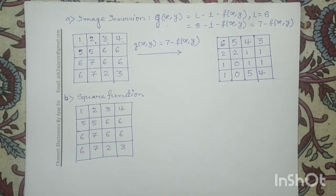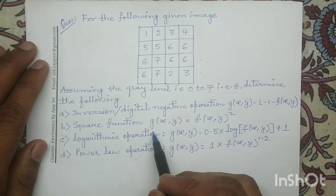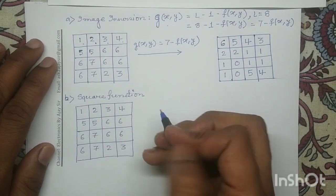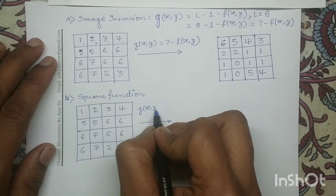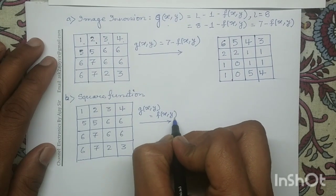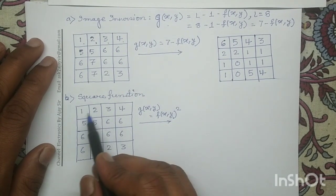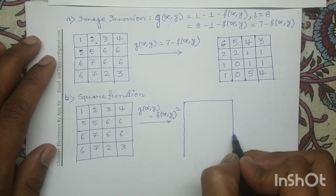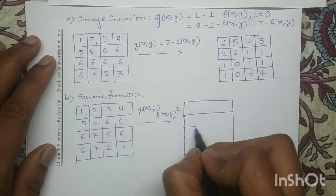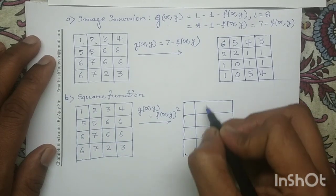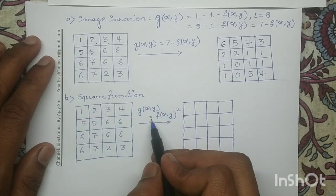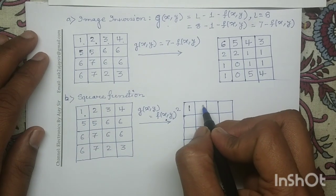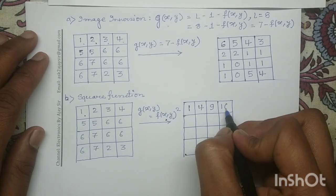Next we have to perform the square function. The mathematical equation of the square function in this question is g(x,y) equals f(x,y) whole square. So on this digital image we will apply g(x,y) equals f(x,y) whole square. Again, to draw the output image we check the dimension of the input image — since it is 4×4, the output image is also 4×4. For each pixel value we apply this transformation: 1 squared becomes 1, 2 squared becomes 4, 3 squared becomes 9, 4 squared becomes 16, and so on.